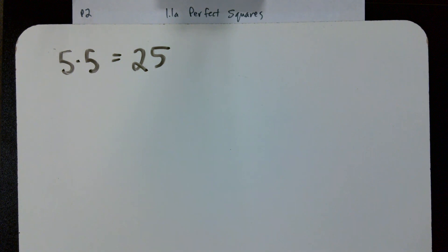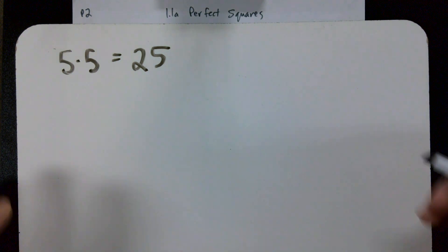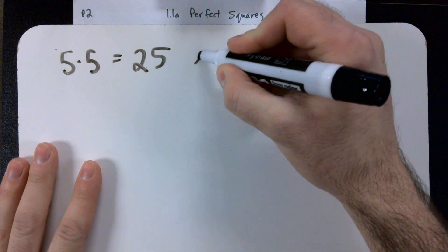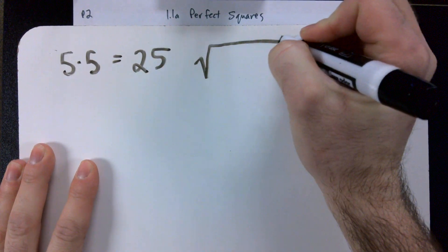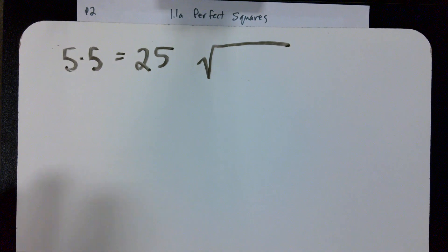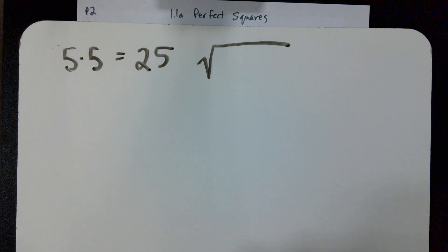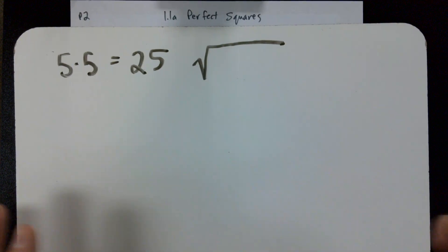What we're going to learn today is a little something called a square root, and it looks something like this. Has anyone ever seen this symbol before in math? Give me a thumbs up if you've seen that symbol before. Have you guys already learned about square roots? Maybe you've seen it, but you don't really know how it works. That's totally fine.